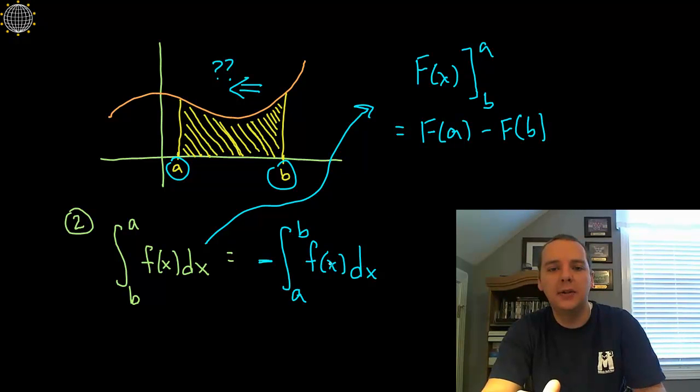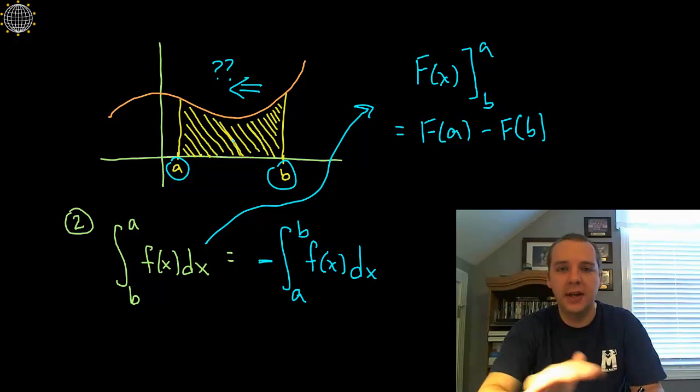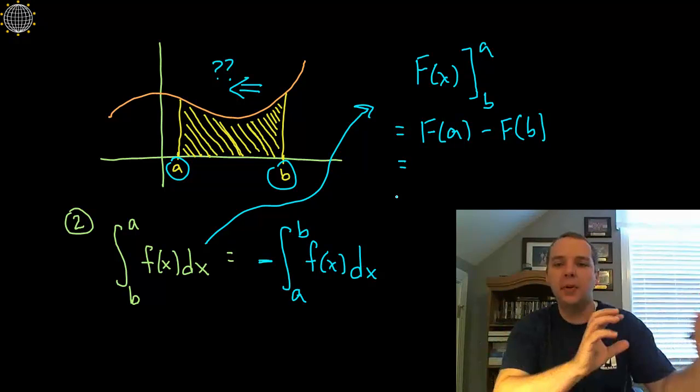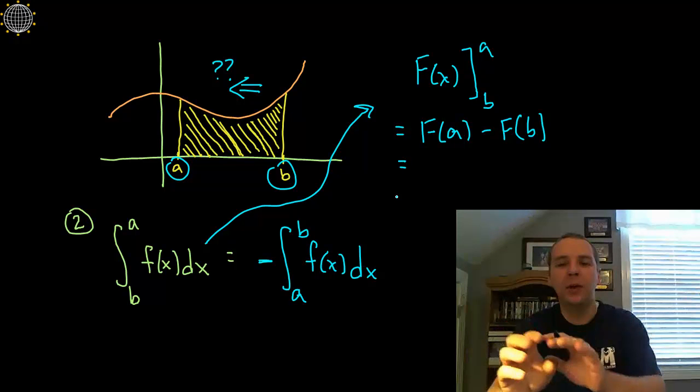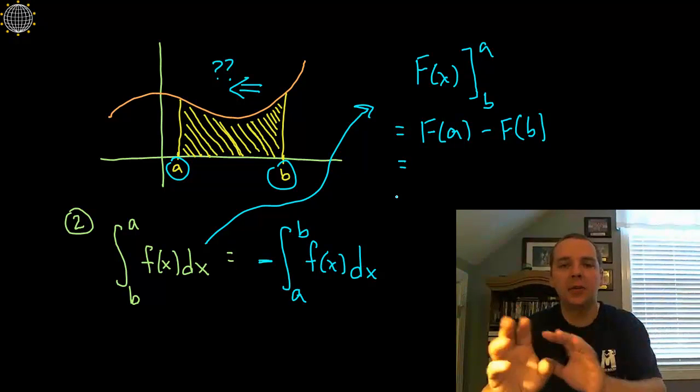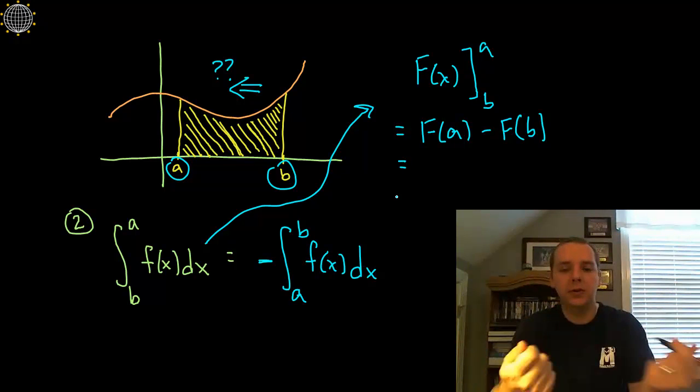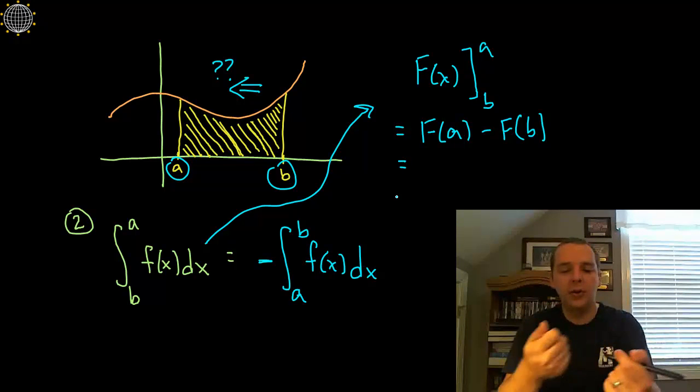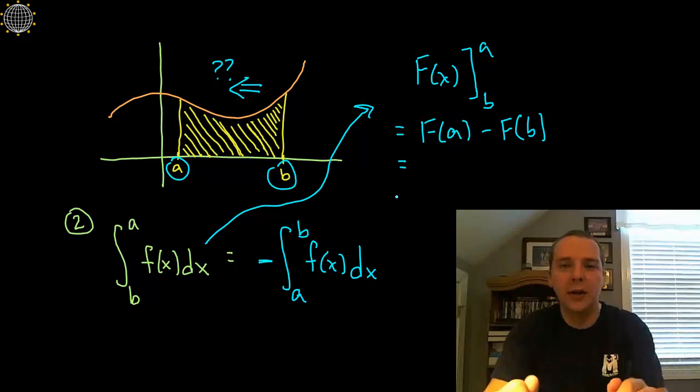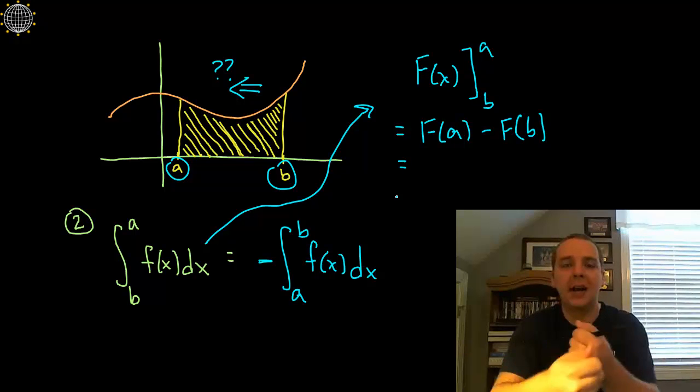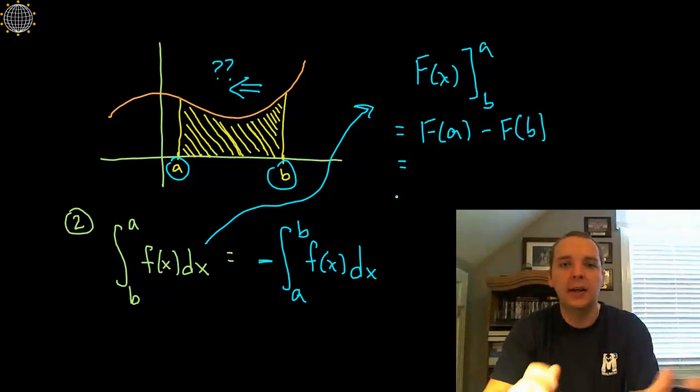But if we had done this for the integral standard from A to B, these would have been reversed. So what's the difference between capital F of A minus F of B versus capital F of B minus capital F of A? Well, as you well know, if you switch the order of two things that are being subtracted, the only difference is the sign. For instance, if you take 10 minus 7, you get 3, but 7 minus 10, you get negative 3.